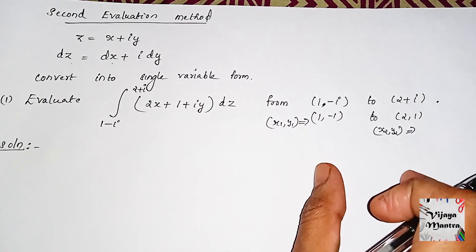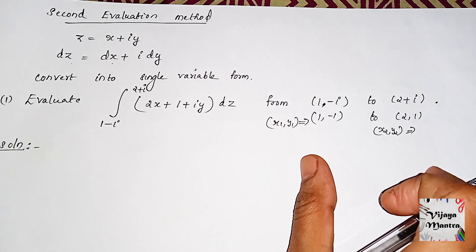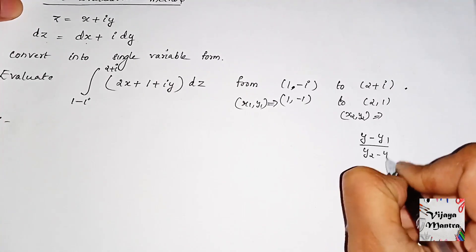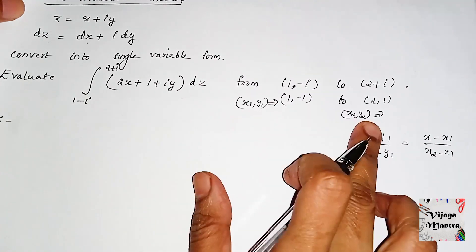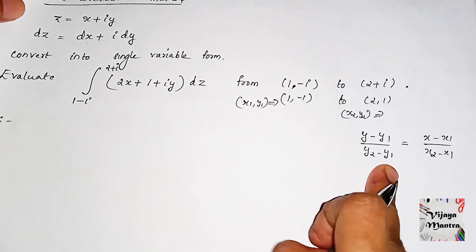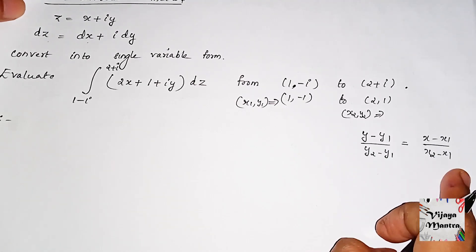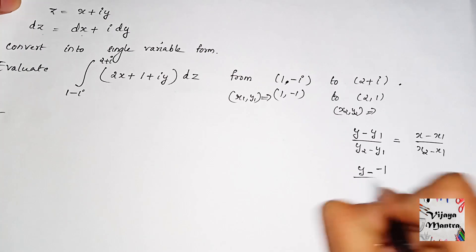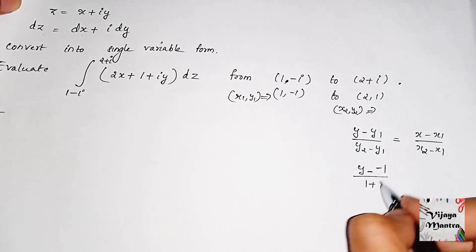Now we have a line segment. We will write the line segment equation: y minus y1 over y2 minus y1 equals x minus x1 over x2 minus x1. This is the line equation with x1, y1, x2, y2. We join the line equation.